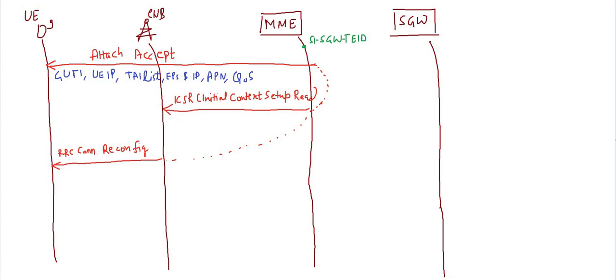Looking at the parameters of these messages: the ICSR will carry security-related parameters, specifically security algorithms. It also carries the ERAB Quality of Service parameters, which are determined by the MME. ERAB is the radio access bearer between the UE and SGW, so the QoS of that ERAB is included.